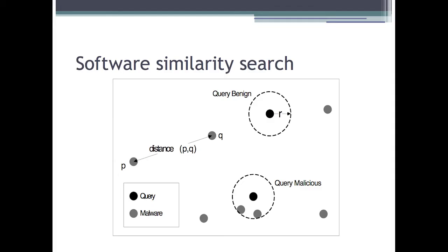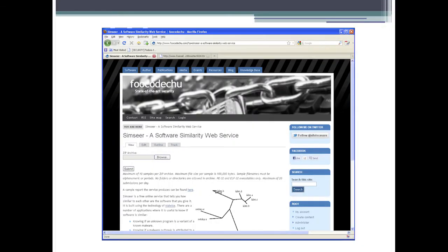We can build on that with a software similarity search — instead of just comparing two programs, we look at how similar one program is to our entire database. Each black dot represents a query and each grey dot an object in our database. We find nearest neighbors within a specific distance, which tells us those programs are variants of our query. The web service lets you submit a zip archive of binaries, which it analyzes to show how similar they are and visualize those program relationships.